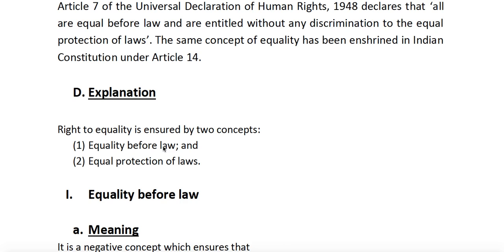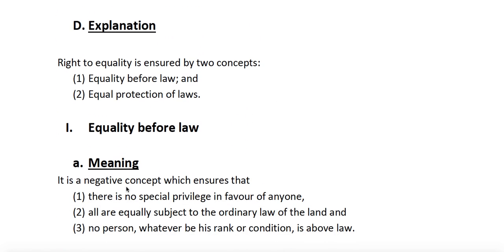Article 14 involves two different concepts: first is equality before law, and the other is equal protection of laws. Reading 'equality before law,' we can understand it means everyone is equal in front of law — no one is above law. It is a negative concept which ensures there are no special privileges for anyone, and all are equally subject to the ordinary law of the land.